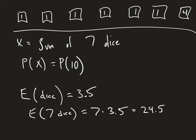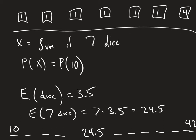Now that we know the expected value is 24.5, we can think about symmetry — 24.5 acts as a balancing point. We have sums on the left side like 10, which is much lower than 24.5, and high numbers on the right like 42, which would be seven sixes. For two probabilities to be the same, the two sums need to be equal distance from the expected sum of 24.5.